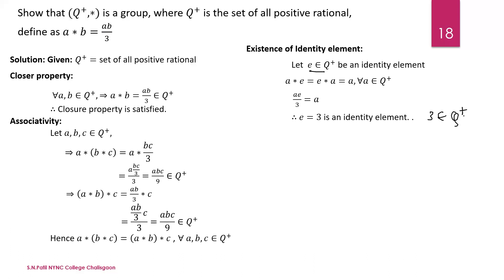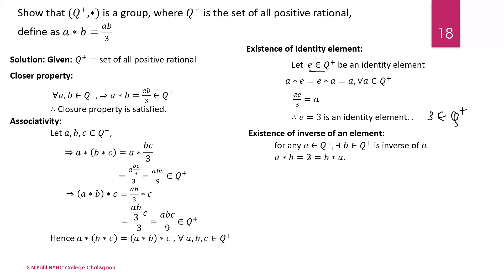Last is the existence of inverse. For every element a in Q+, there exists an inverse b such that a star b equals the identity element 3. Now a star b equals ab/3 equals 3, so ab equals 9, giving b equals 9/a. Therefore the inverse of a is 9/a. All four conditions of the group are satisfied.